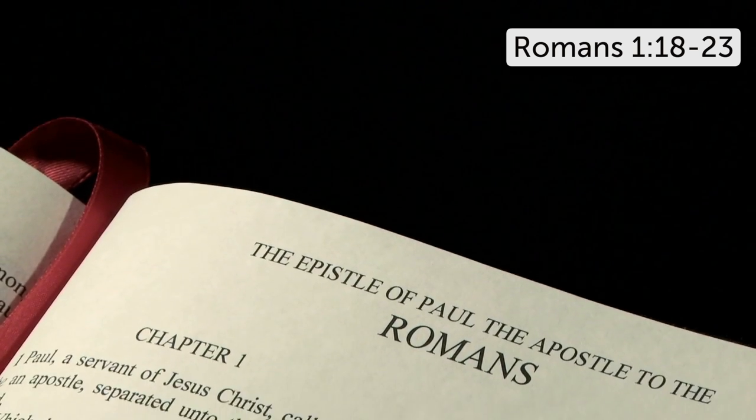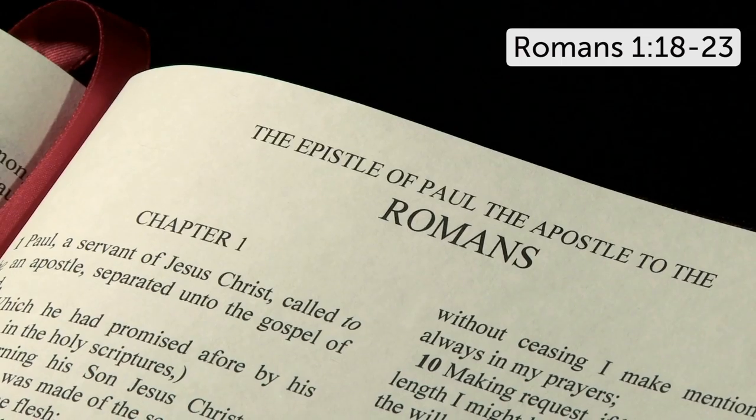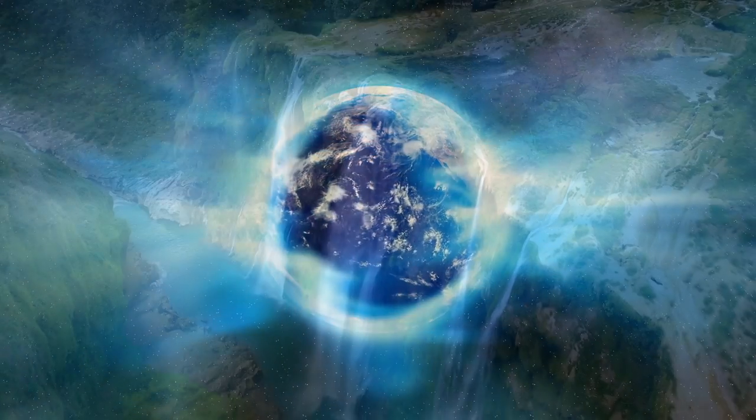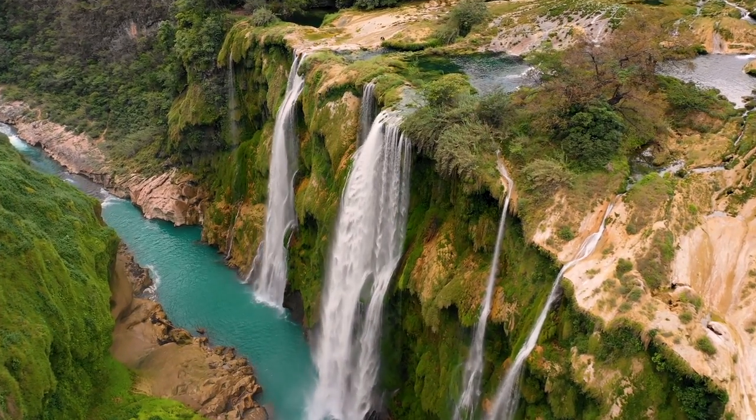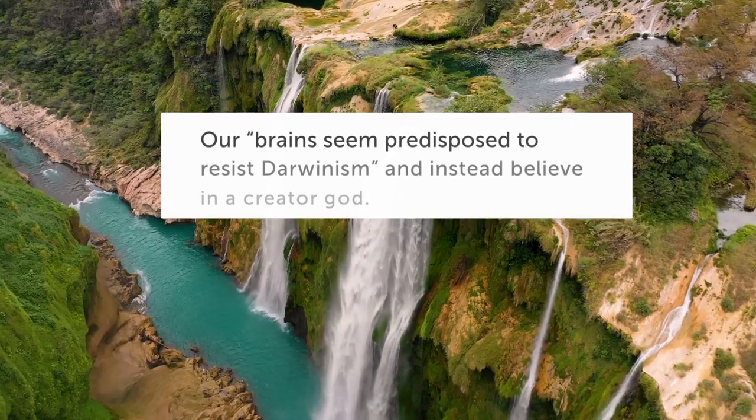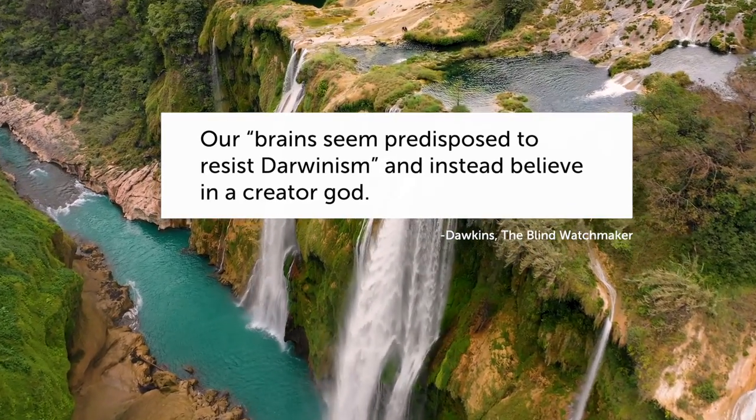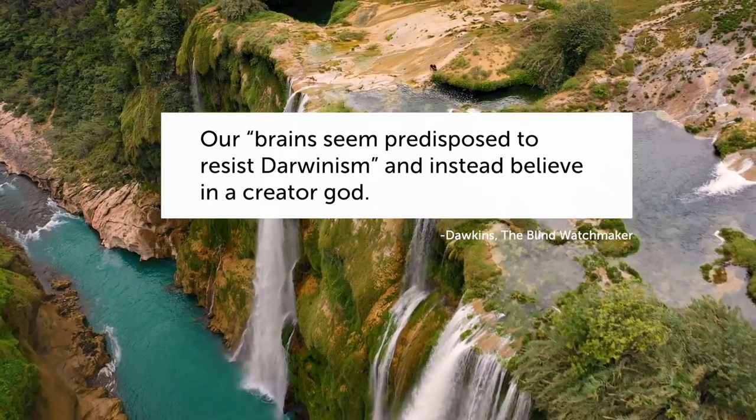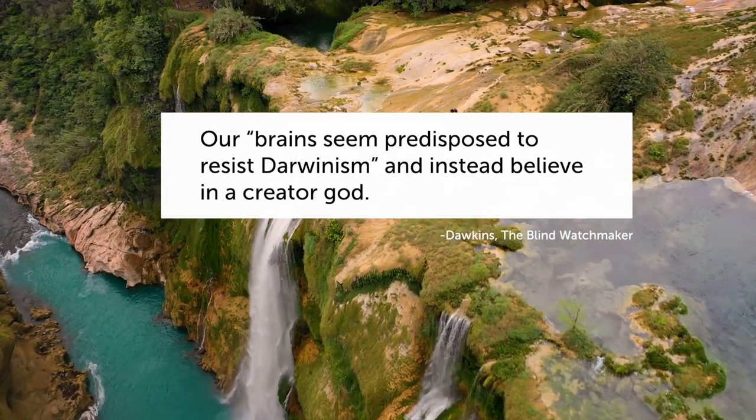In Romans chapter 1, 18 to 23, God tells us that all people know a powerful God exists because they learn that from what God has created. The fact that nature testifies about God may be what led atheist Richard Dawkins to write that our brains seem predisposed to resist Darwinism and instead believe in a creator God.